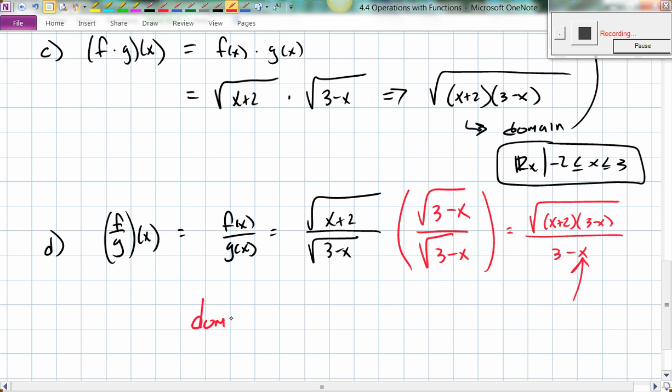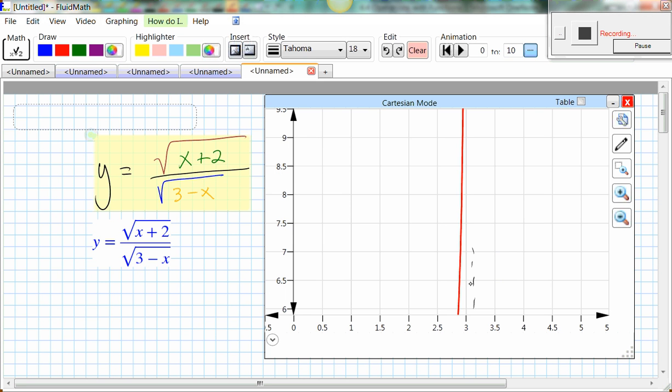So the domain for this last one would be all real numbers x such that negative 2 less than or equal to x, no problem there, but you have to strictly restrict the domain on the 3 part. Notice that that is not less than or equal to because of this reason you get a vertical asymptote there. Okay, hope that helps you guys out.